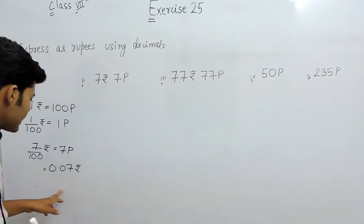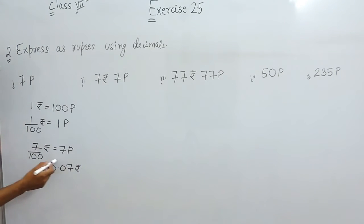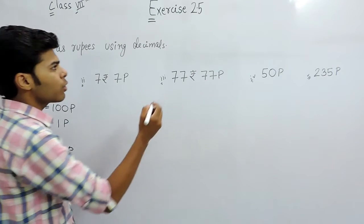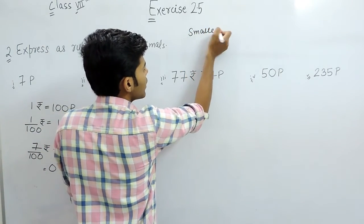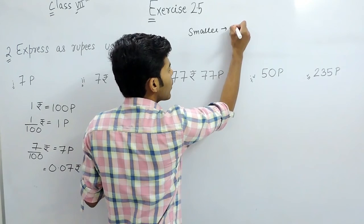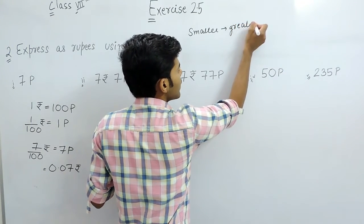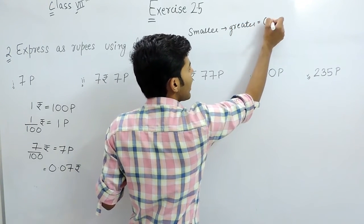Now, we will check that the answer we have given is correct or not. The simplest way to remember this question is: when we have to convert smaller quantity into greater quantity, then we always divide.